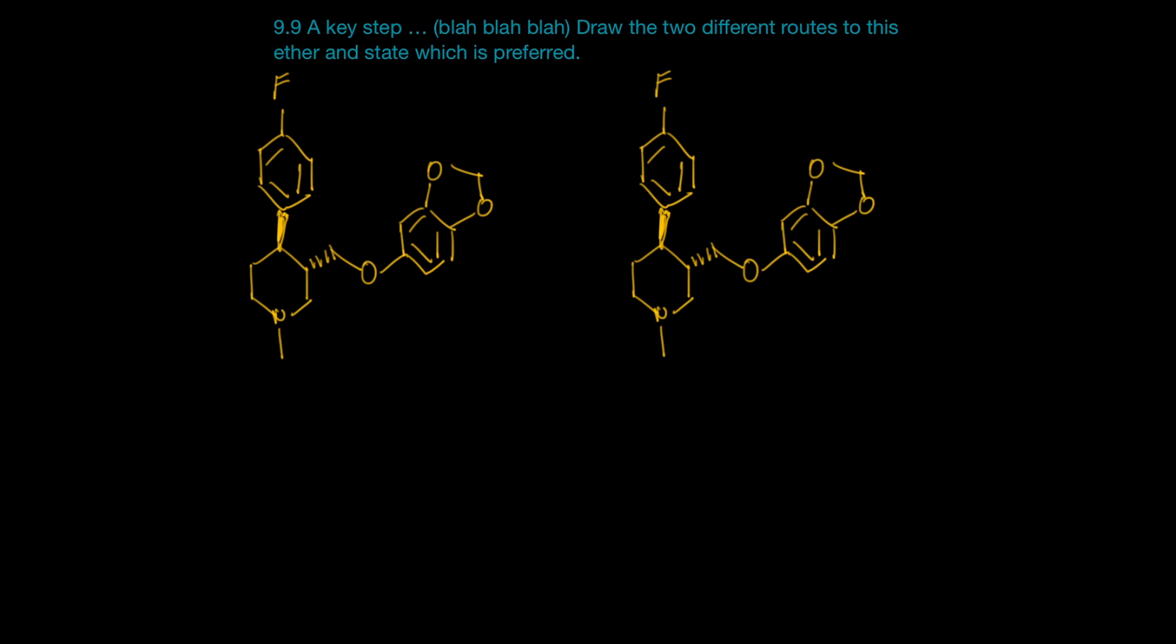Problem nine, it's kind of a wordy problem. They're giving us this antidepressant drug here. I've copied and pasted it. You're looking at the exact same molecule on each side and we're asked to draw two different routes using a Williamson ether synthesis to create this ether here on the left.